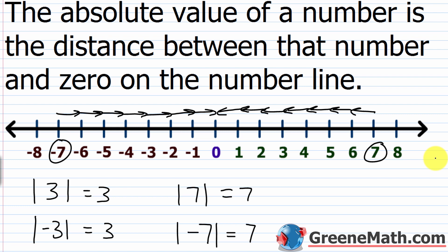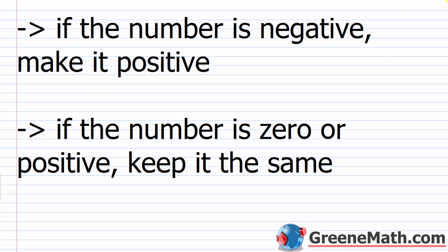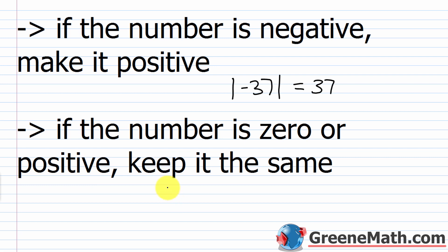Think about it in real life: you can either drive zero miles or some positive amount of miles — you can't drive a negative amount. So we don't need a number line every time. The rule is: if the number is negative, just make it positive. If the number is zero or positive, keep it the same. For example, the absolute value of negative 37 is just 37, and the absolute value of 42 is just 42.